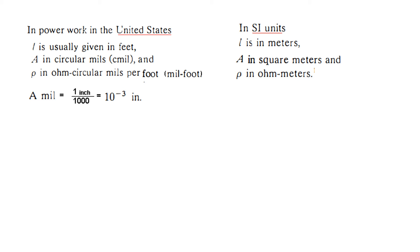Now what is mil? A mil is one thousandth of an inch. So one inch divided by one thousand is equal to one mil or 10^-3 of an inch. A circular mil or cmil is the area of a circle having a diameter of one mil. If the diameter is one mil or one thousandth of an inch, then this area will be called one circular mil.